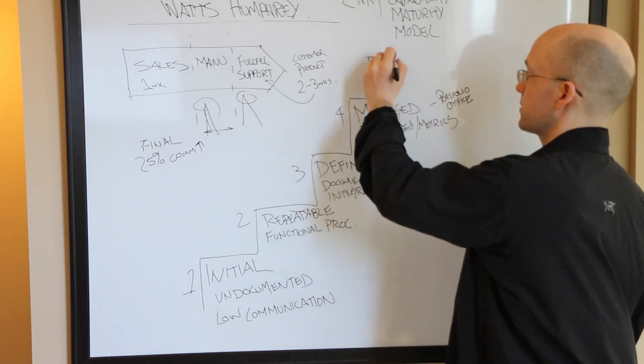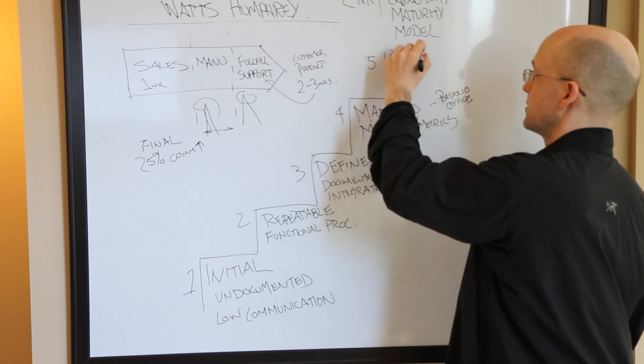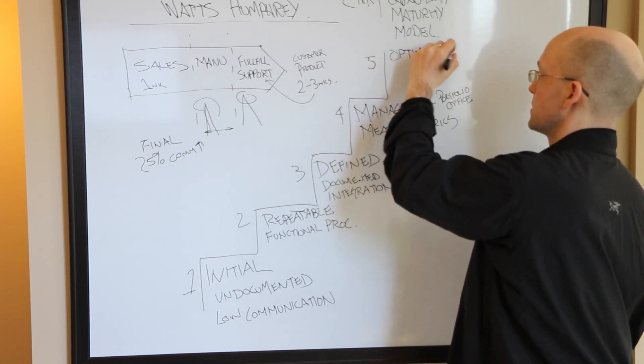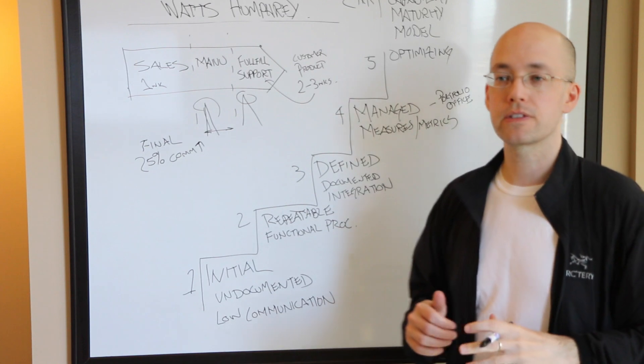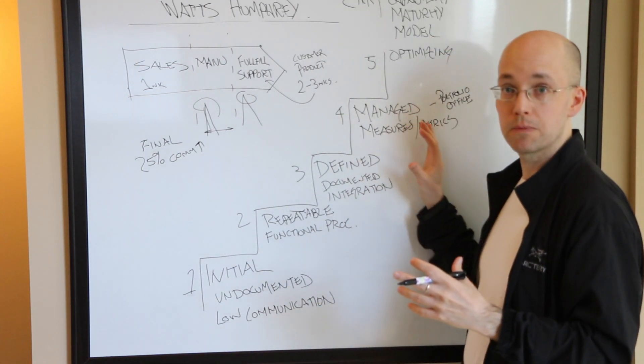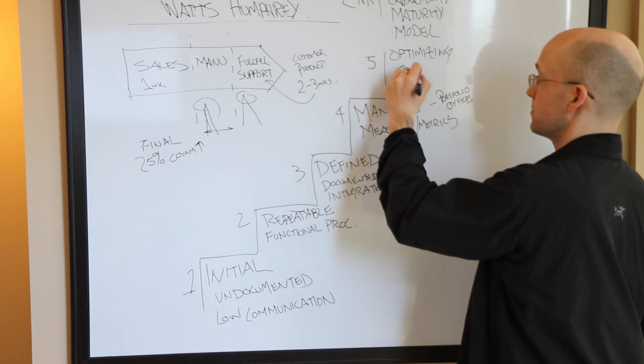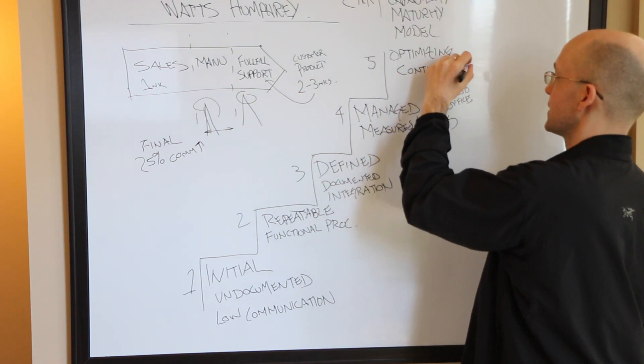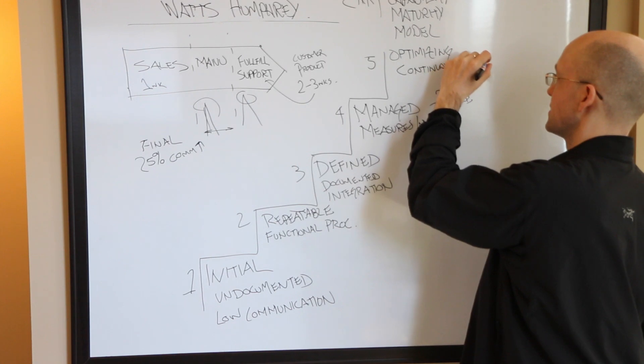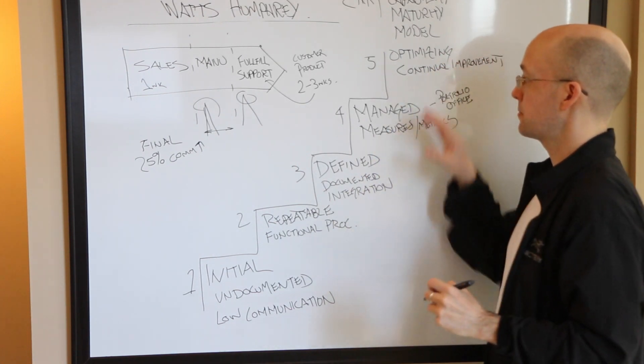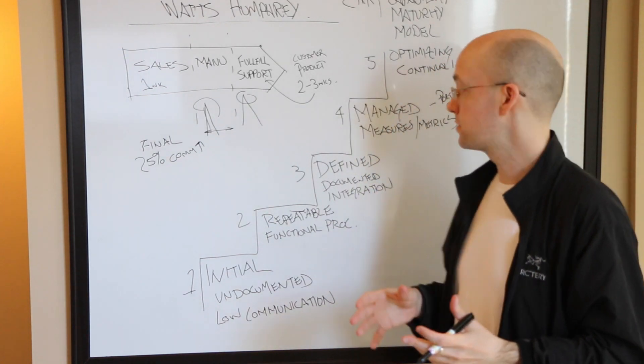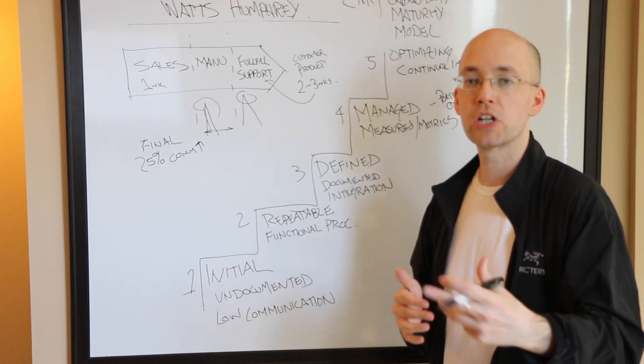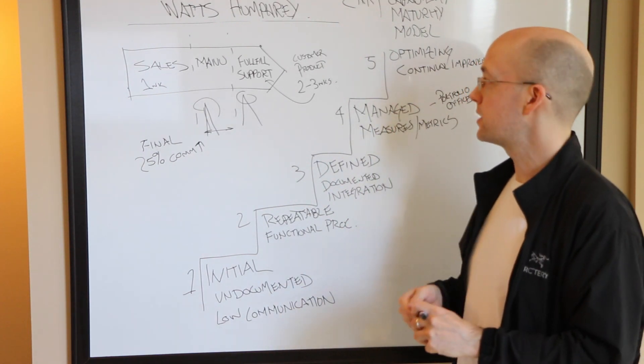Last is optimizing, Level 5. Now we're at this level, we have our measures in place. Now we can do continual improvement. We can build the continual improvement, we can build programs of change.